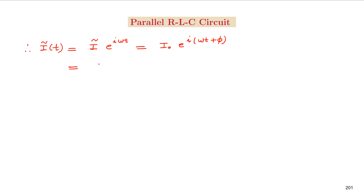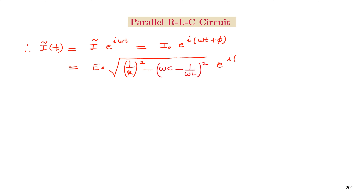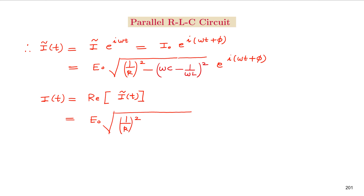The real instantaneous current is the real part of the complex I(t), equal to E0 times √[(1/R)² + (ωC − 1/(ωL))²] times cos(ωt + phi). This is the expression for the instantaneous current in a parallel RLC circuit. We see that by the method of complex impedances, we can find the solution to this complex problem in an easier manner.